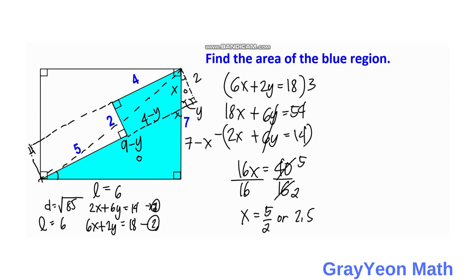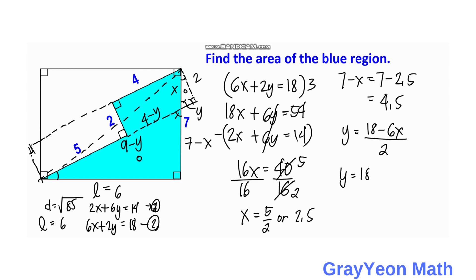With x = 2.5, we get 7 − x = 7 − 2.5 = 4.5. For y, using Equation 2: y = (18 − 6x)/2 = (18 − 6 × 2.5)/2 = (18 − 15)/2 = 3/2 = 1.5.